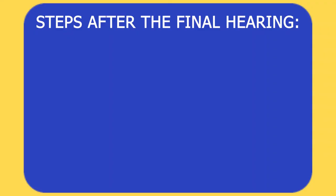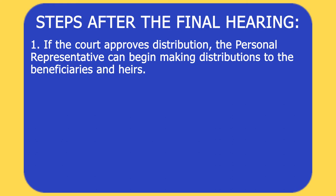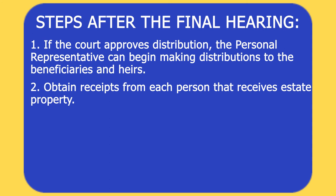At the final hearing, the judge will review the documents and hopefully approve the distribution. At that point, the personal representative can make distributions to the beneficiaries or heirs of the estate. After distributing the assets, the personal representative will need to obtain a receipt from each person who receives estate property. Each receipt should be filed with the court prior to filing a petition for final discharge. For anyone who received real property, the recording of the order with the county recorder is considered the receipt for that property.